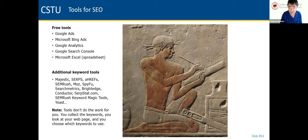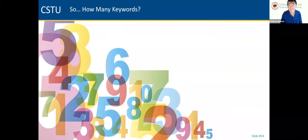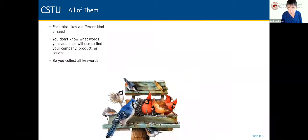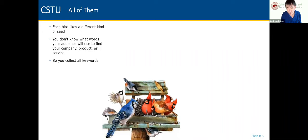Can we trust the data from these tools? And how many keywords should you use? Use all of them. If you find 30,000 keywords, use all 30,000 because you don't know which ones are going to work. It's like a bird feeder — you put in all kinds of seeds because you don't know which seed will bring which bird. You don't know which keyword will work, so you try all of them.